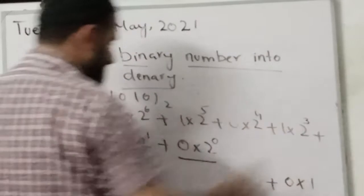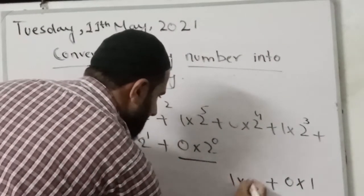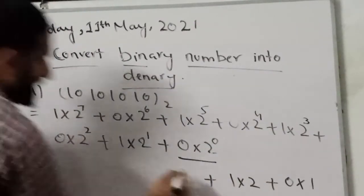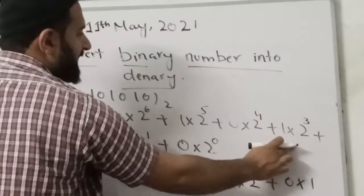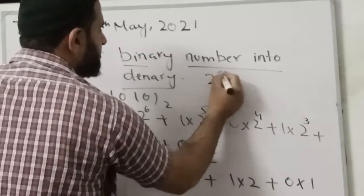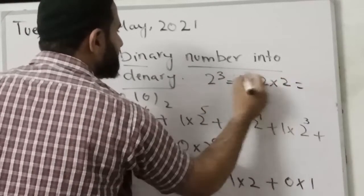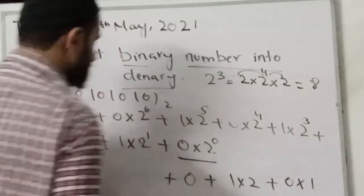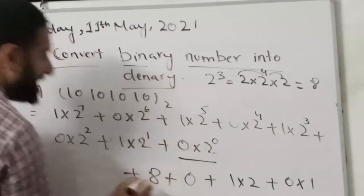Now next step is 1 multiplied by 2, plus 2 power 2. 2 power 2 means 4, 2 times 2 are 4. 4 multiplied by 0 will give you 0. Now here 2 power 3 means 8. 2 power 3 equals multiply 2 three times: 2 times 2 are 4 and 4 times 2 are 8. So we will write here 8 multiplied by 1, so we will get 8, plus 8.